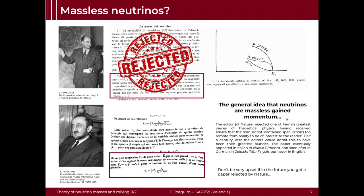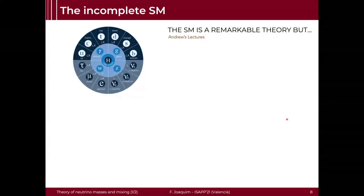An interesting thing about this Fermi paper, which is just a curiosity, is that this paper was originally rejected by the editor of Nature. The reason was that it contained speculations which are 'too remote from reality to be of interest to the reader.' So this teaches us a lesson, especially for the young people: don't be very upset if in the future you get a paper rejected by Nature. This doesn't mean that you will not win a Nobel Prize. So history went on, and this was actually the first description of weak interactions.